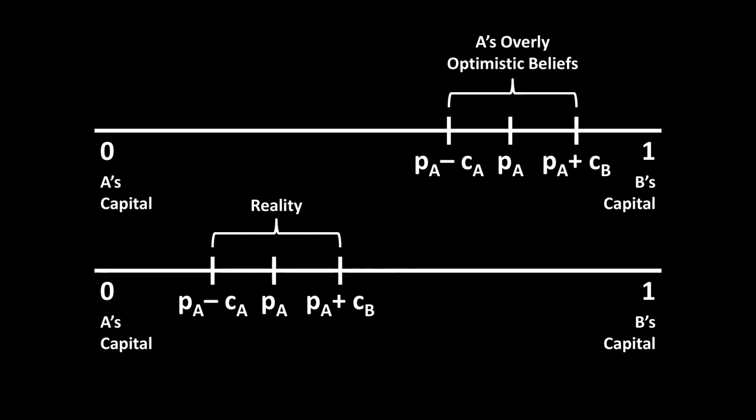Now imagine that you're a third party and your only goal is to minimize the probability of war. Then you have a singular task: do everything in your power to convince A that the situation most resembles what's at the bottom of the screen rather than what's at the top. If you can successfully convince A of that, A is going to make a very small demand, and at that point it doesn't matter whether the opponent is the weak type or the strong type — it's going to accept because it's getting a large concession. So if you want to minimize war and maximize peace, all you should be doing in that mediation process is convincing each side of its relative weakness.